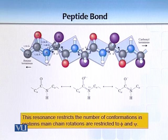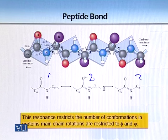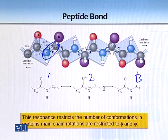There are three resonance structures associated with the peptide bond. You can observe the C-N bond and C-C bond in these resonance structures.